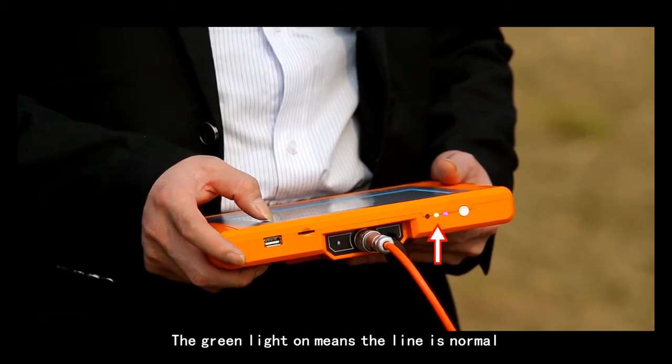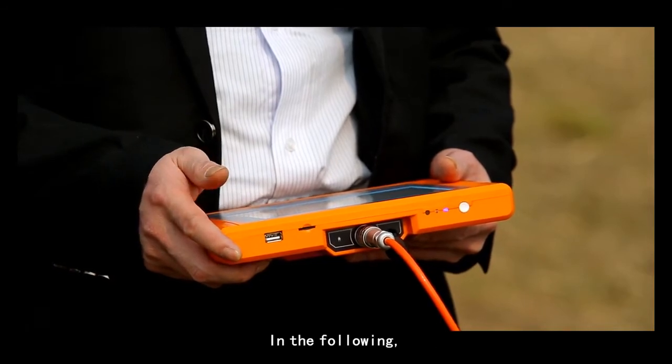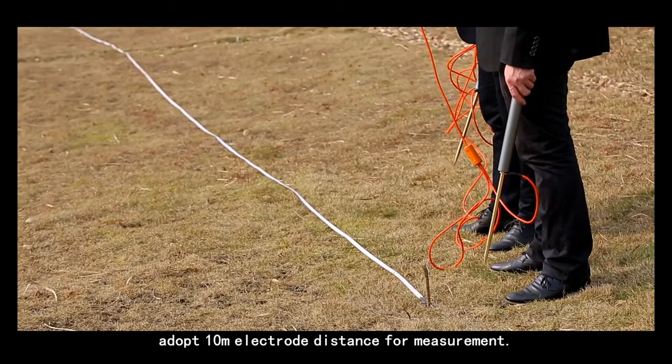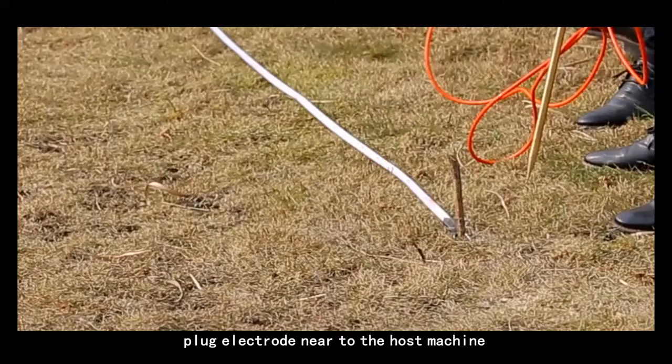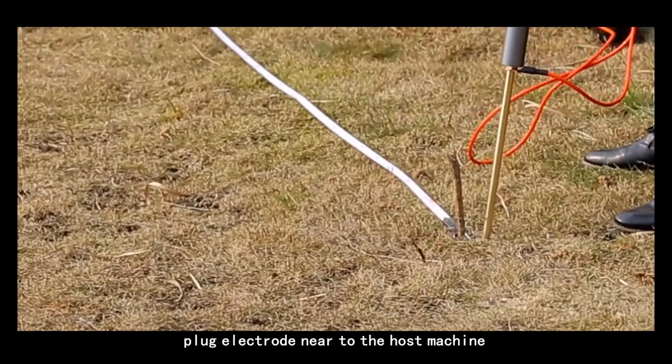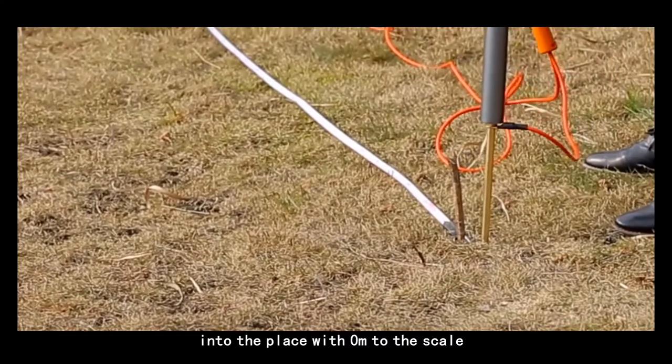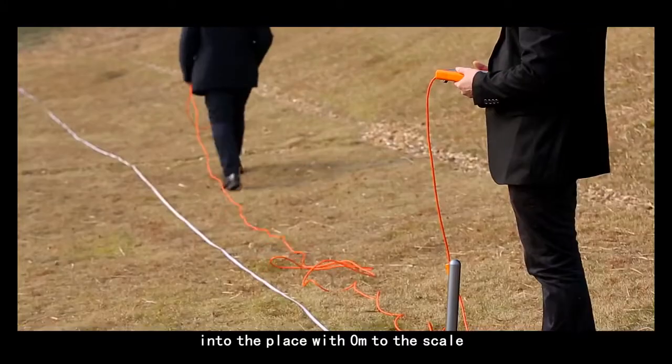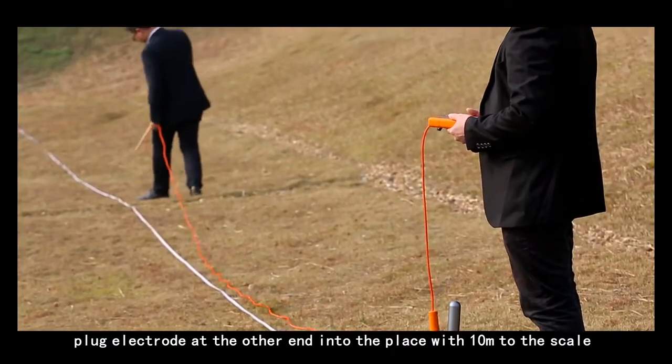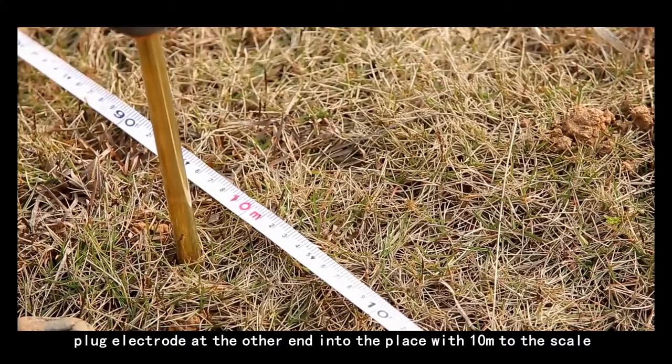In the following, adopt 10 meters electrode distance for measurement. Plug electrode near to the host machine into the place with 0 meters to the scale. Plug electrode at the other end into the place with 10 meters to the scale.